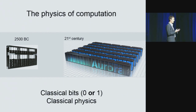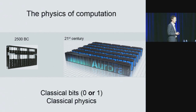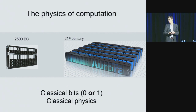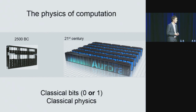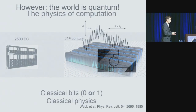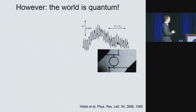In the case of classical systems, they are necessarily in well-defined states. So when we encode a bit in the voltage on a capacitor, that bit has to be either 0 or 1, a well-defined state. But ultimately, the world around us is quantum mechanical.